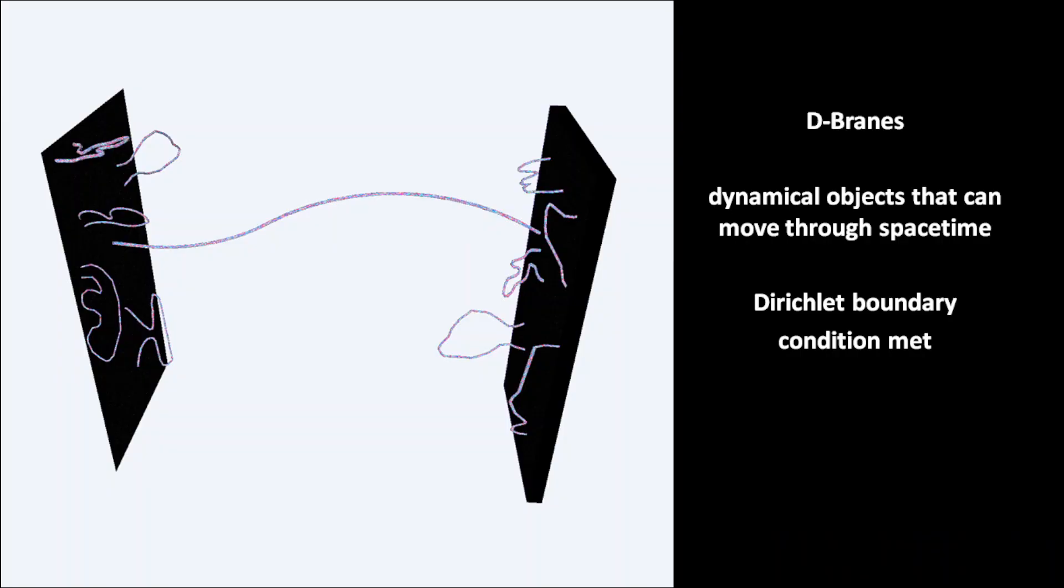D-branes are dynamical objects that can move through spacetime according to the rules of quantum mechanics. This is a picture of open strings attached to a pair of D-branes. D stands for the Dirichlet boundary condition, which is met by D-branes. A tachyon inflation model is proposed in the framework of holographic cosmology.